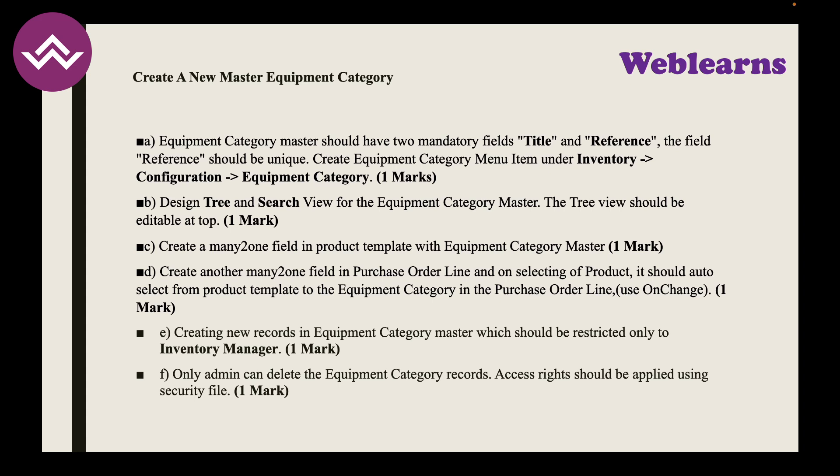Task A: Create a custom module. Under that, create an Equipment Category master model with only two fields: title and reference. The menu should be available under Inventory > Configuration, and the menu name should be 'Equipment Category'. Once this is done, you achieve one mark.